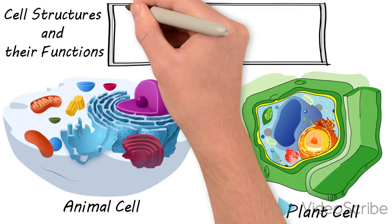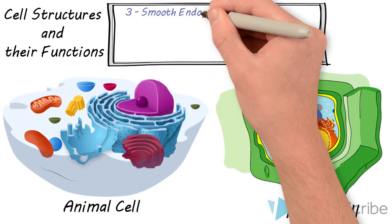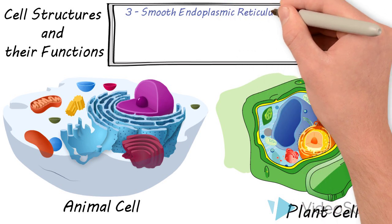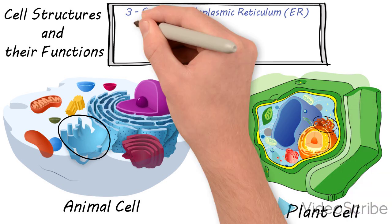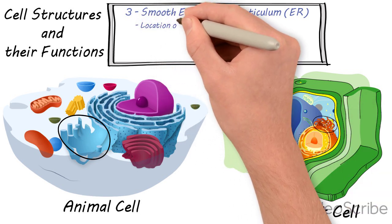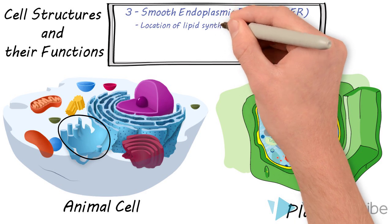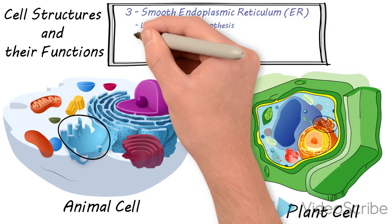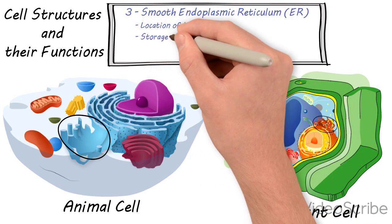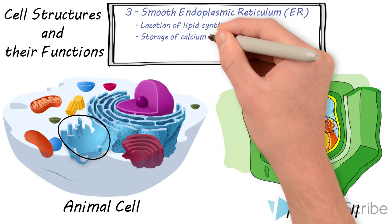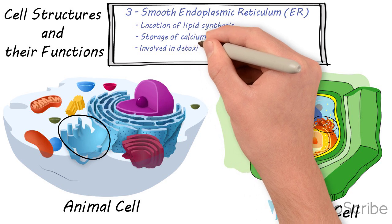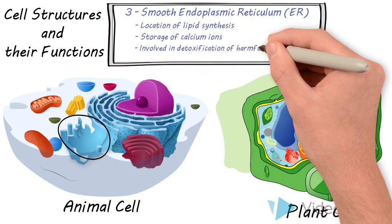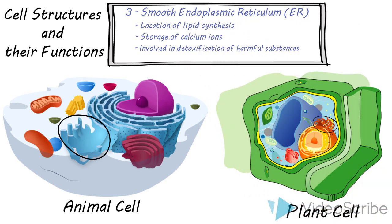And you have the smooth endoplasmic reticulum or the smooth ER which you can see here. The smooth ER makes lipids for the cell membrane and for the cell's functions. It also stores calcium ions to be released later and it's involved in detoxification of harmful substances. You have a lot of smooth ER in the liver where you have a lot of detoxification.